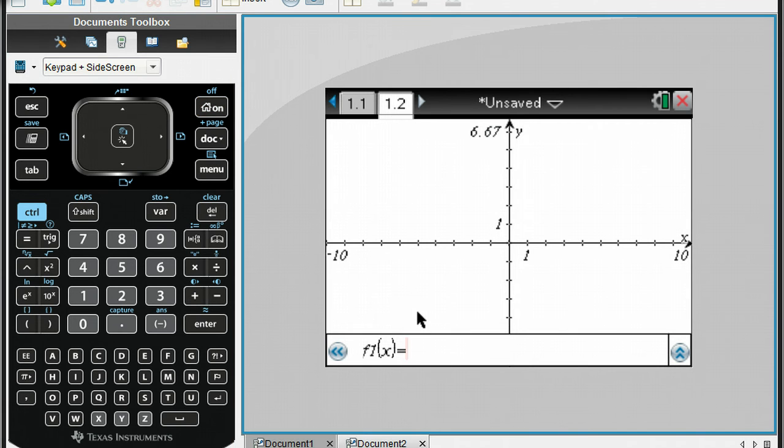Now the default setting for your graphing calculator is that your x minimum is negative 10, your x maximum is a positive 10. Your y maximum is 6 and 2 thirds, and you can't see it right now, but our y minimum would be a negative 6 and 2 thirds. So we want to change those settings. So we're going to do that first.